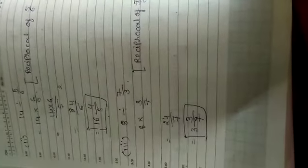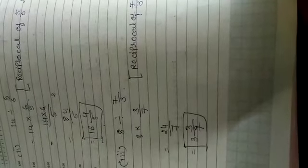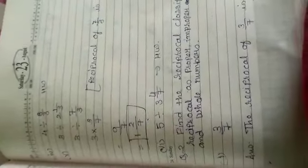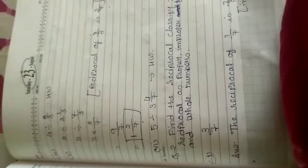Same way I solved here third one: 8 divided by 7 upon 3. Reciprocal of 7 upon 3 is 3 upon 7. So 8 multiplied by 3 upon 7. The answer is 3 and 3 upon 7. Same way I solved here fourth one and fifth one and sixth one, it is in homework.